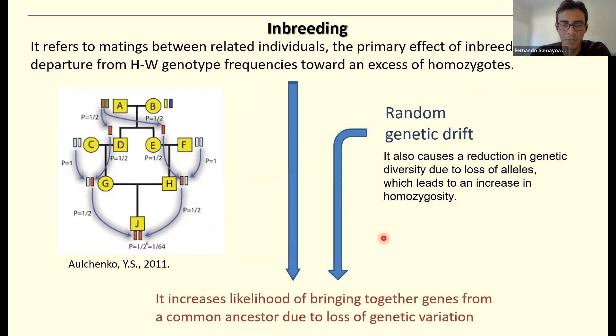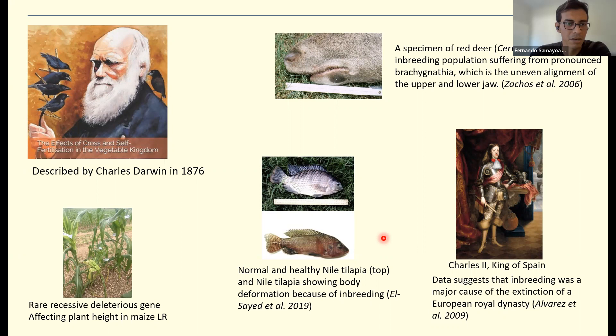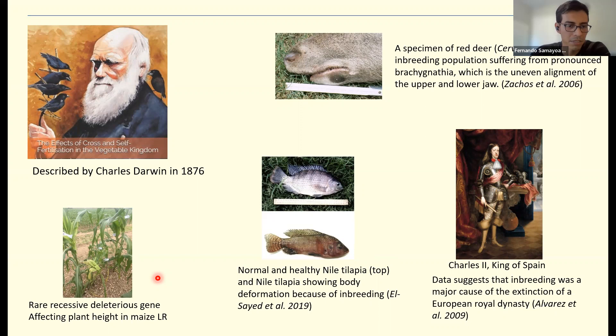Inbreeding depression was initially described by Charles Darwin in 1876 in his work 'The Effect of Cross and Self Fertilization in the Vegetable Kingdom.' There are also several examples in the animal kingdom. For example, this is a picture of a red deer suffering from brachygnathia, a misalignment of the upper and lower jaw. Here is another example with fishes, and here is an example observed in one of our maize populations — a red recessive deleterious gene affecting plant health. There are also examples in humans, particularly in some European royal families.